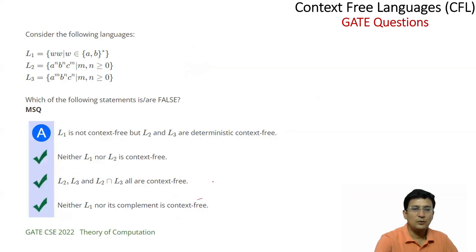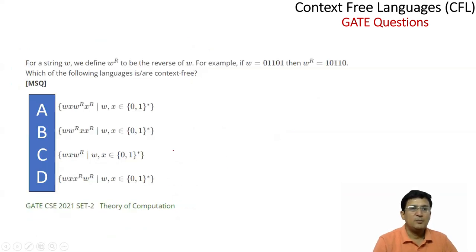So these three statements are false. The next question states there is a W and WR means that it is reverse. So which of the following languages are context-free?